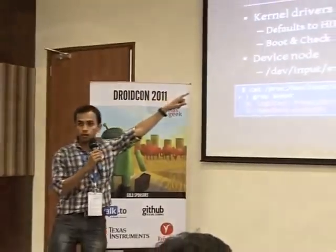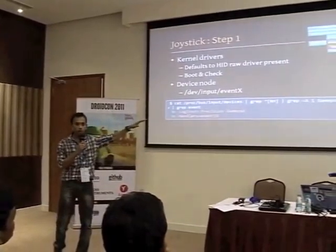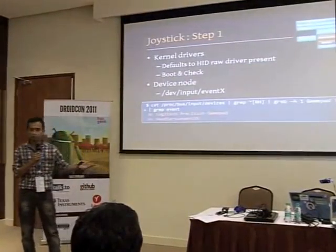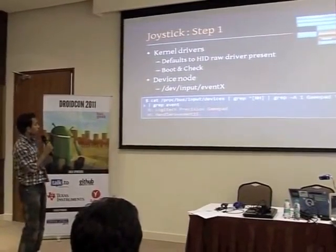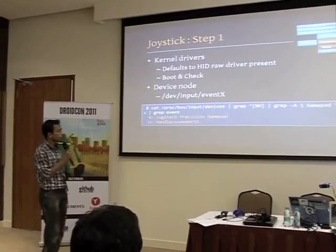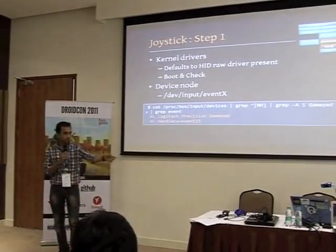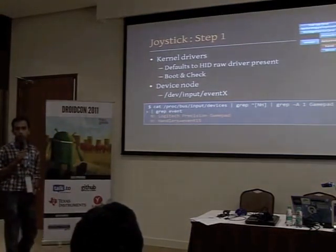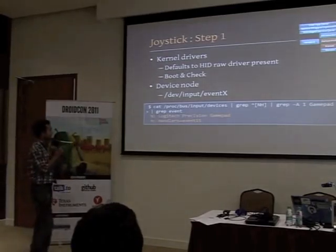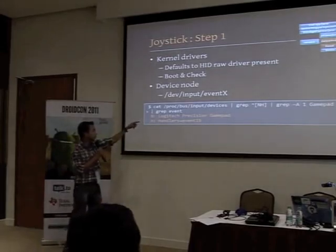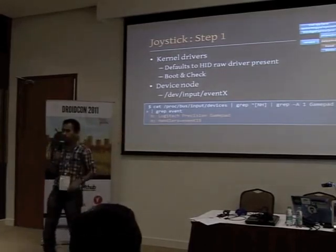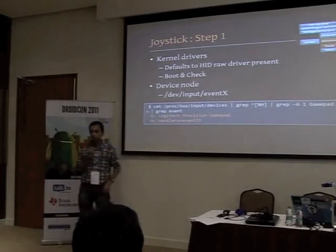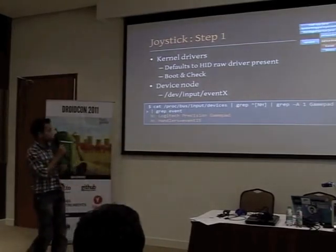Step one: the kernel layer. The kernel comes preloaded with the HID device drivers, which is what the joystick uses, so you don't have to do much with device driver manipulation there. All you have to do is boot up and check if it comes out as one of your input subsystem device nodes. You'd find it in the file structure at /dev/input/event_x, where x could be any number. You can do a small regex and find out — in my case it's the Logitech Precision Gamepad at event15.